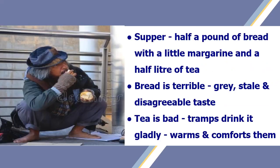After his bath, the tramp receives his supper. It consists of half a pound of bread with a little margarine and a half litre of tea. The bread made specially for tramps is terrible — grey, always stale and with a disagreeable taste. Even the tea is very bad, but the tramps drink it gladly as it warms and comforts them after the tiredness of the day.